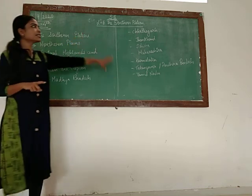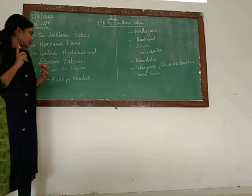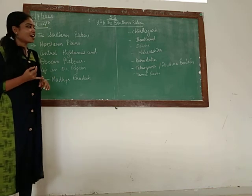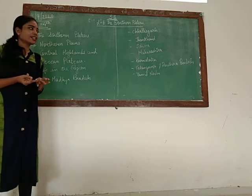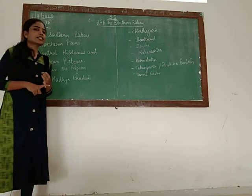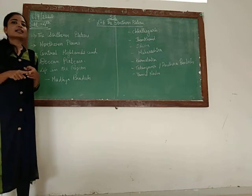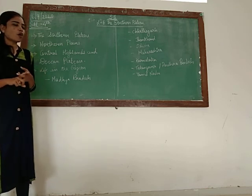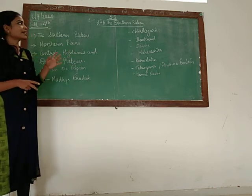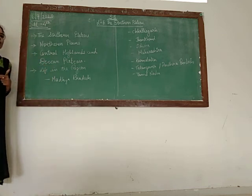These are the states through which this lesson covers: like Madhya Pradesh, Chhattisgarh, Jharkhand, Odisha, Maharashtra, Karnataka, Telangana, Andhra Pradesh, and Tamil Nadu. We will see in depth about the states — which is the capital of the state, how people are living, and what are the basic things that they follow. So these are the topics that we are going to cover in this chapter, that is the Southern Plateau. We will see one by one about each topic.